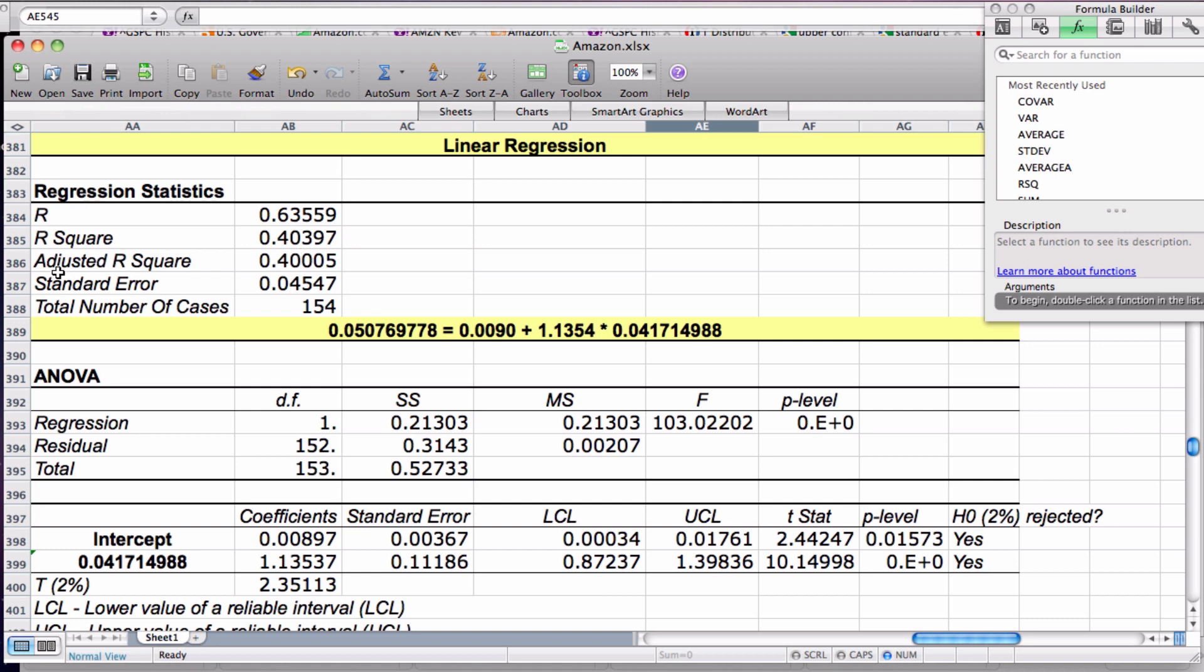The adjusted R squared is, in my opinion, a more reliable statistic because it takes into account your sample size. The standard error measures the variability of actual Y values from the predicted Y values. It's the same as standard deviation. And here we have the total number of cases.